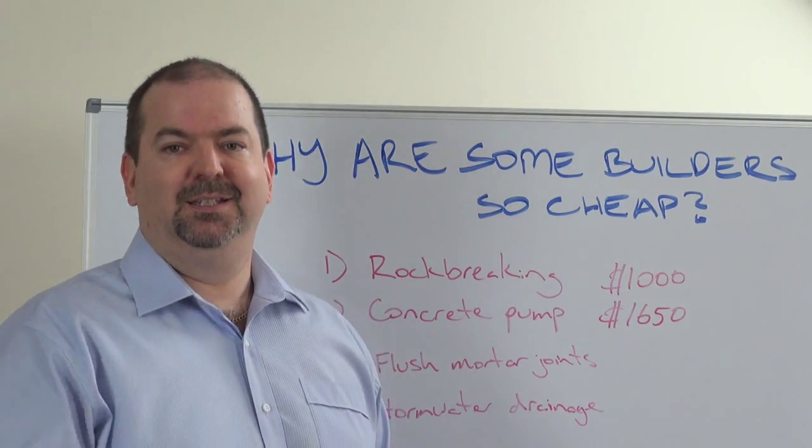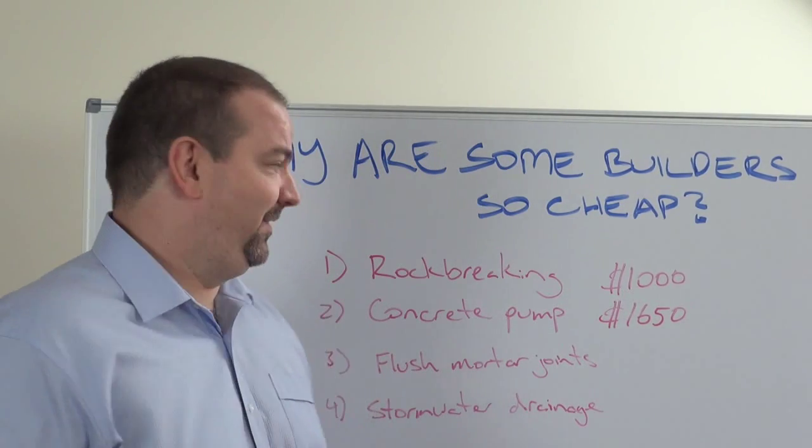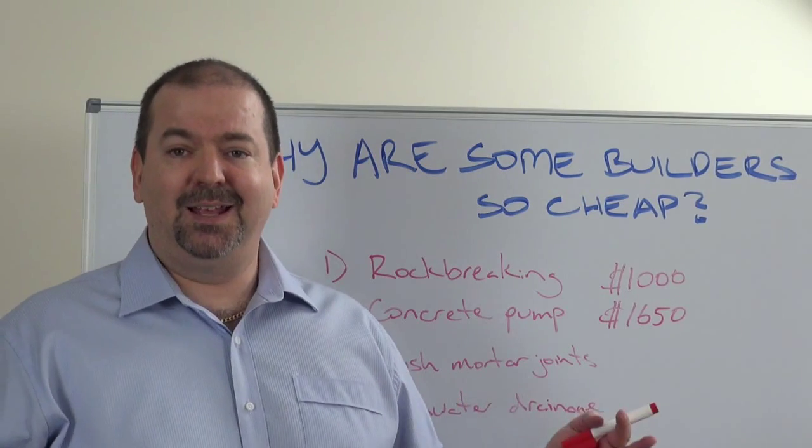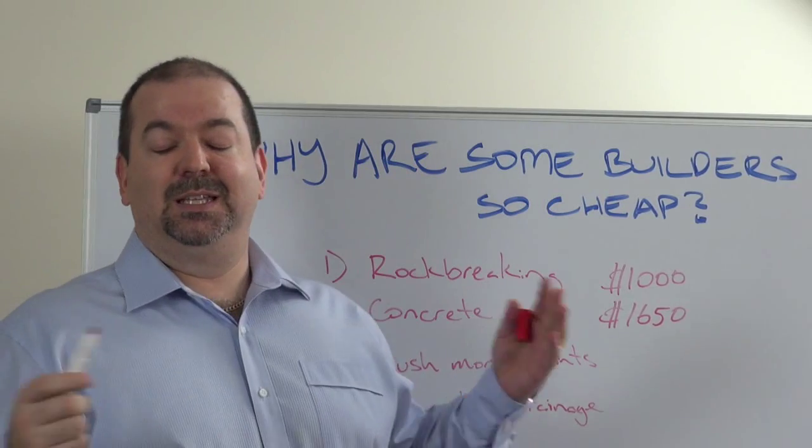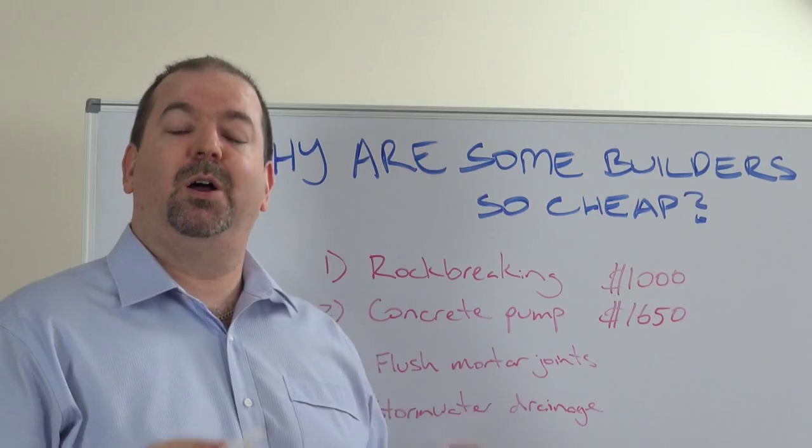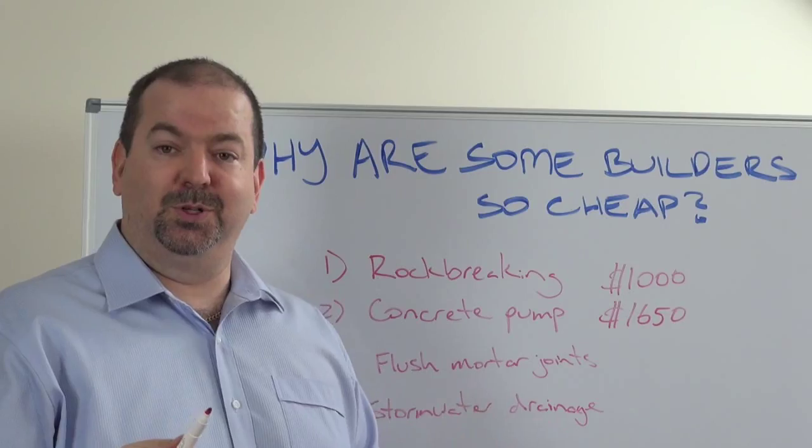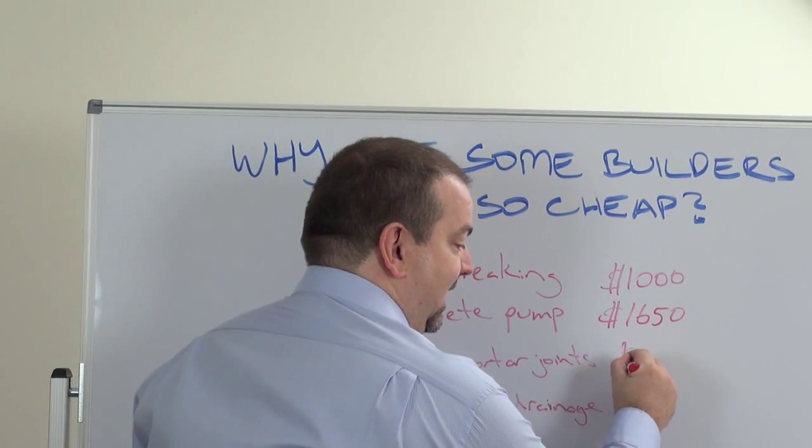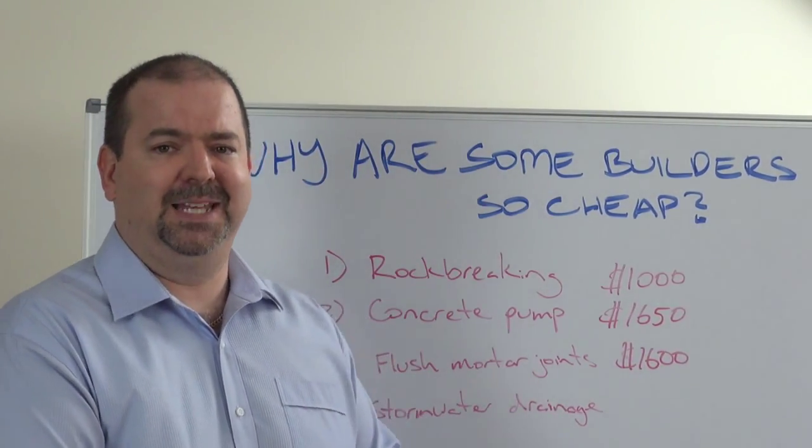A little disgusting, if I may say so. Another example: recently another builder was going through pre-start with one of their clients and their client said I want flush mortar joints on my brickwork instead of raked mortar joints. So what did the builder do? They said no problem, for $1,600 you can make that change.